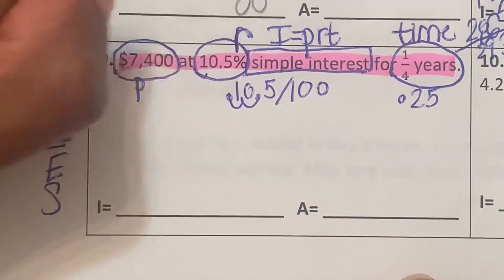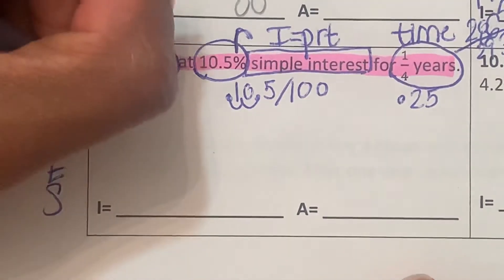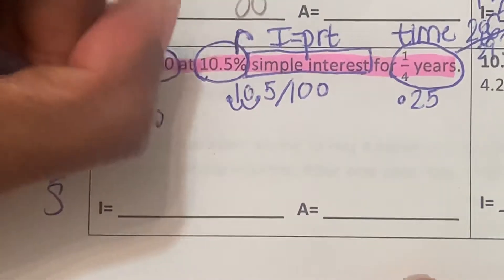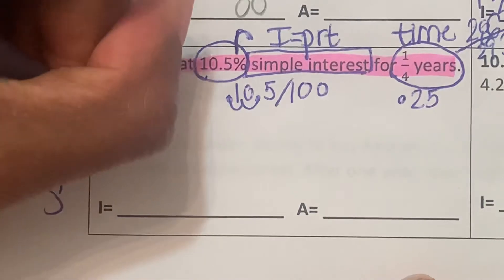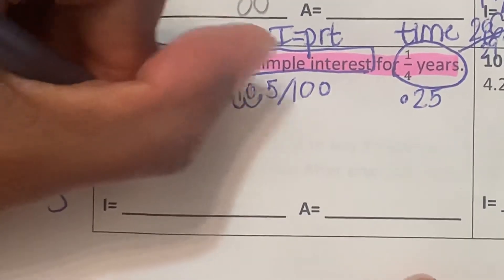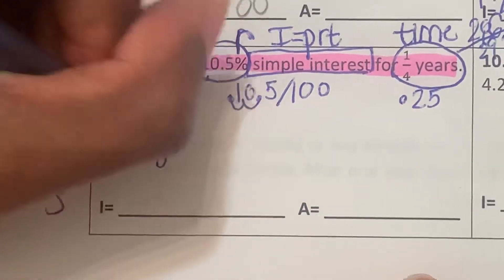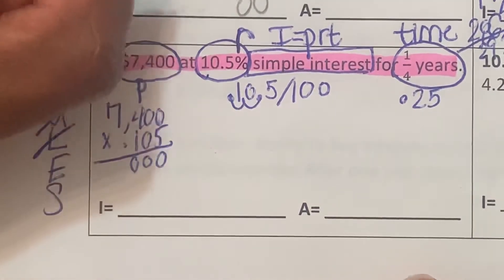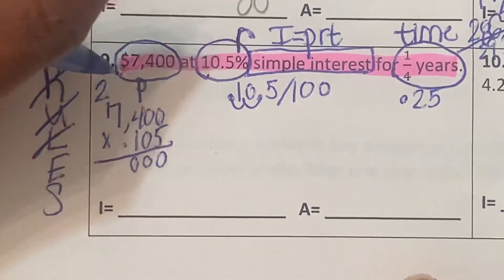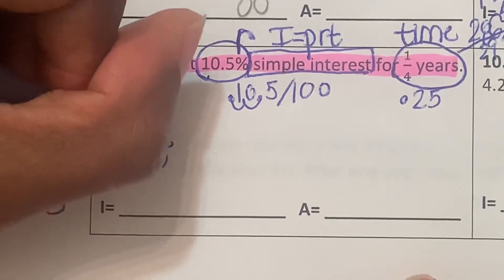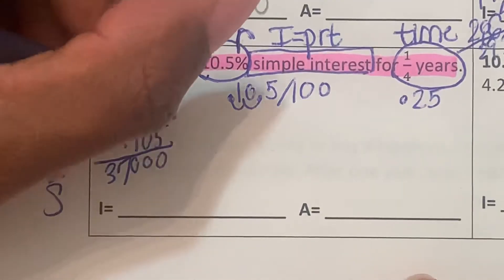So let's start doing our evaluation, our math. So we're going to do 7,400 times 0.105. Five times zero is zero. Five times zero is zero. Five times four is 20. Five times seven is 35 plus two is 37.